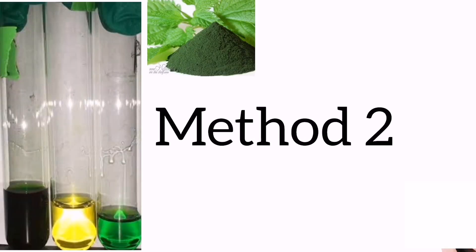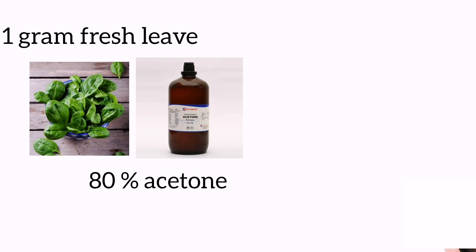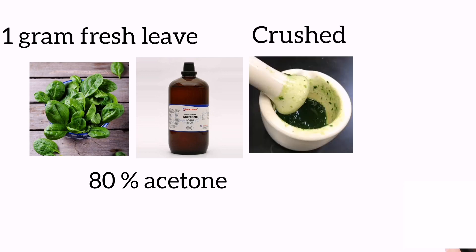Method 2. Extraction of chlorophyll, Arnon 1949. 1 gram of finely cut fresh leaves were taken and ground with 20-40 ml of 80% acetone.